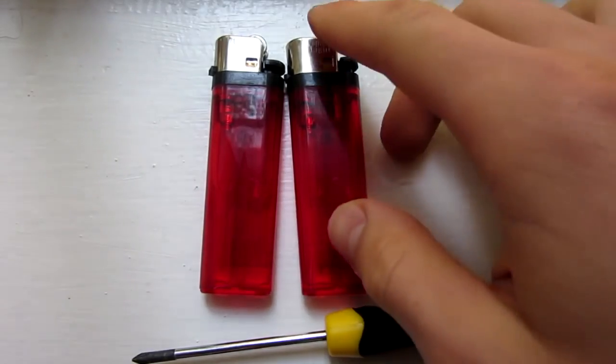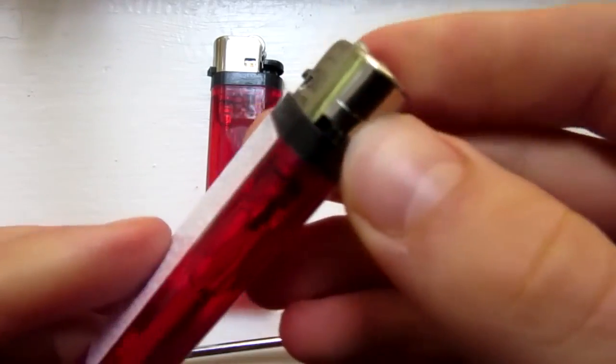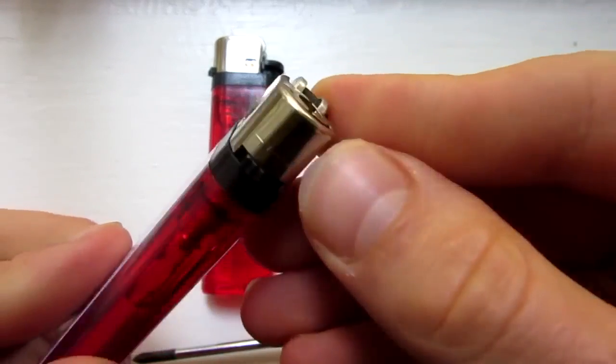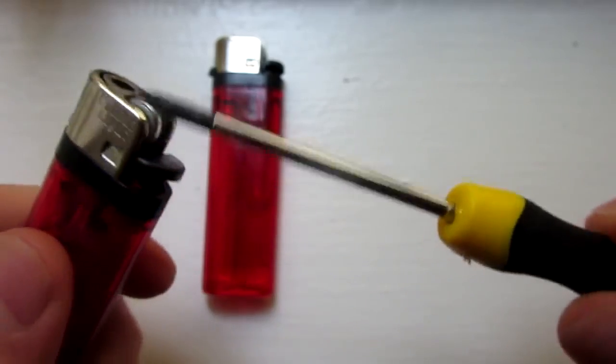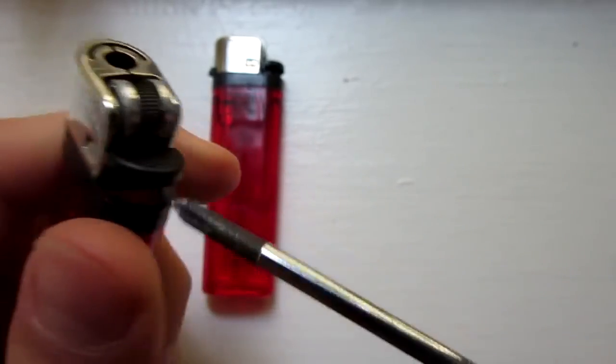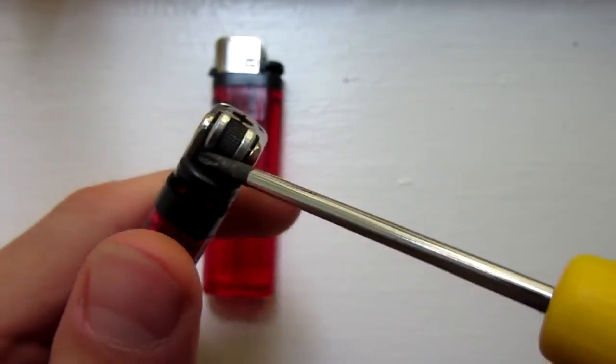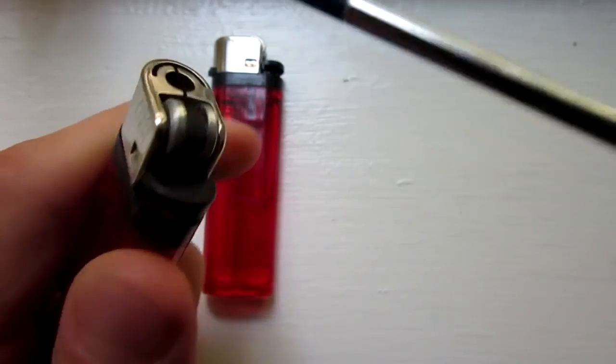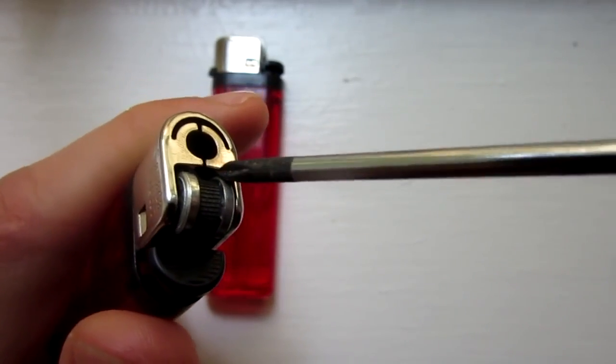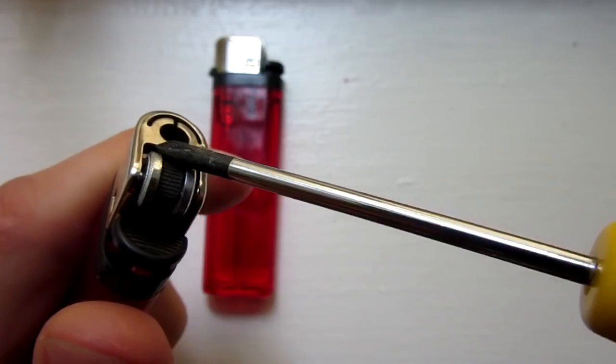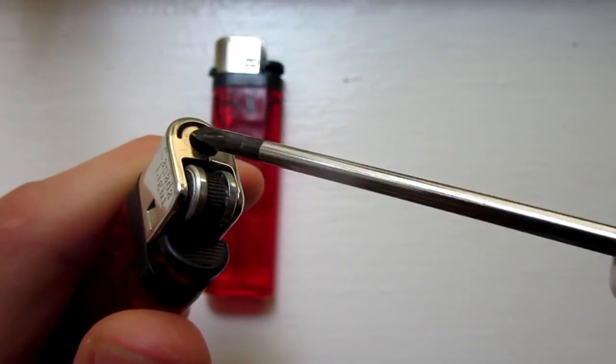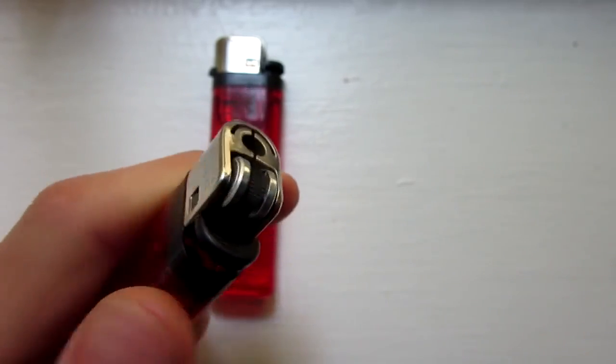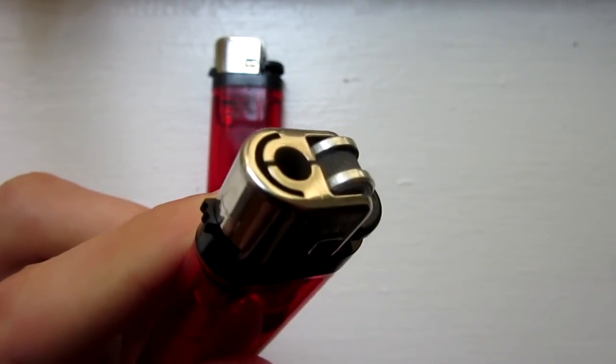So the first step here is to remove this metal casing at the top, and to do that, you are going to use your prying utensil. I have a small screwdriver here, and sticking it in there, prying it open. You can also stick it in here somewhere, and the key is to only remove this metal casing. Make sure not to remove the wheel, as it is almost impossible to put back in.